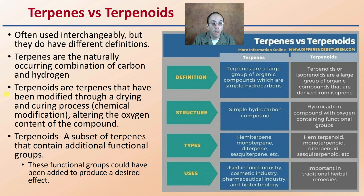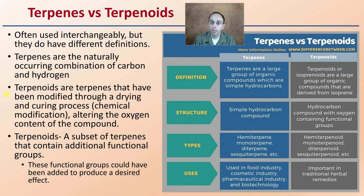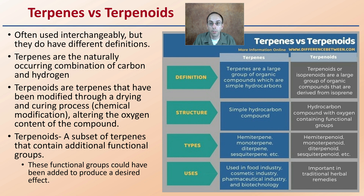Terpenoids are a subset of terpenes that contain additional functional groups. These functional groups could have been added to produce a desired effect, or could be naturally occurring through the drying process. Structurally, terpenes are simple hydrocarbon compounds, while terpenoids are hydrocarbon compounds with oxygen-containing functional groups — an important structural difference.